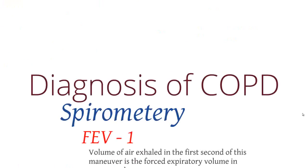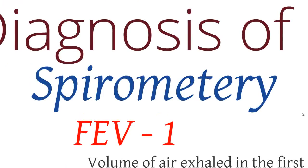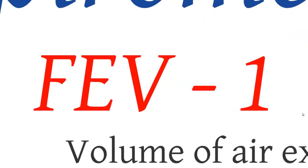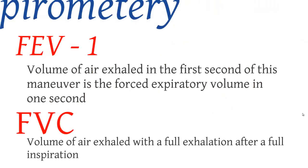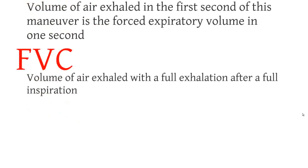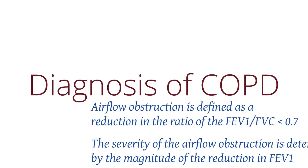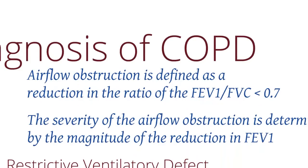Now let's look at how to diagnose COPD. We diagnose COPD using spirometry, using two values. The first is FEV1, or forced expiratory volume in one second — the volume of air that you can exhale in one second. The second is forced vital capacity — if you take a full breath in, it is the volume of air you will exhale with a complete full exhalation. To diagnose any airflow obstruction such as COPD, we look at the FEV1 over FVC ratio. If this is less than 0.7, or 70%, then the patient has an airflow obstruction.